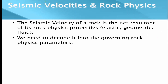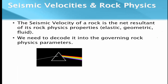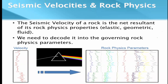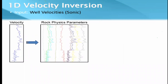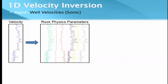The amplitude of seismic is because of the velocity contrast between two layers, and the velocity contrast exists because certain rock properties are gradually changing. Seismic velocity is the net resultant of rock properties — elastic, geometric, and fluid — and we need to decode it into rock physical properties. I refer to this using Newton's prism analogy: white light passed through a prism splits into all the rainbow colors. Similarly, velocity is a composite signature; when decoded it splits into different rock physics parameters. This is essentially a 1D velocity inversion: from the sonic log we get velocity, and from velocity we compute all rock physics parameters.